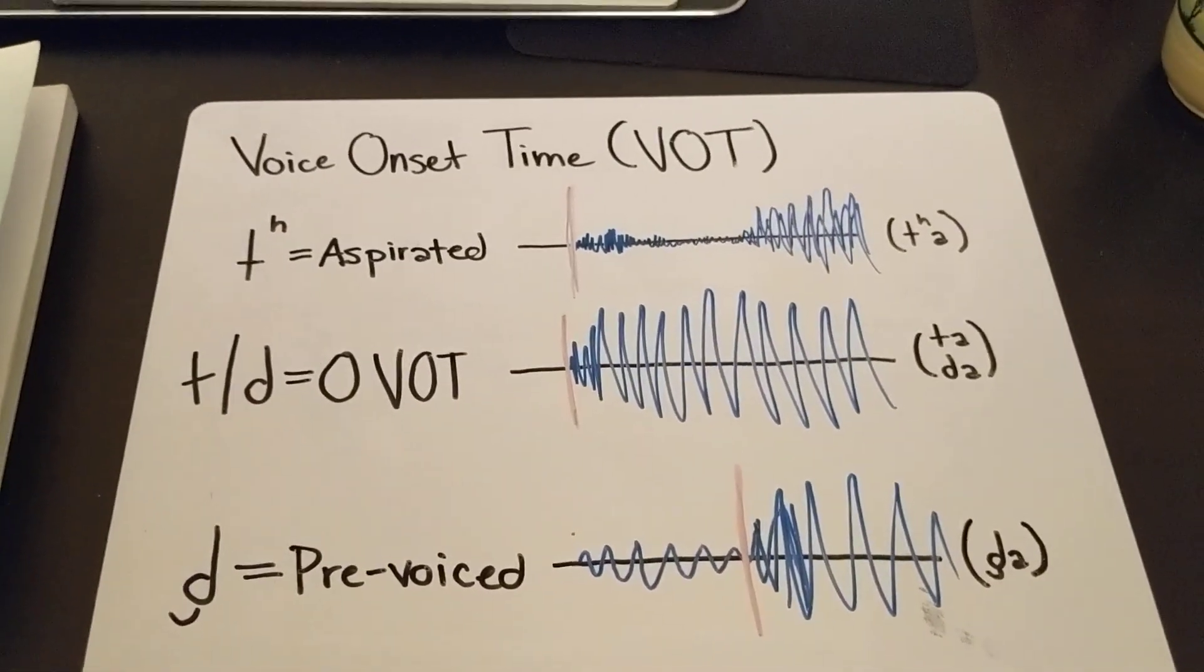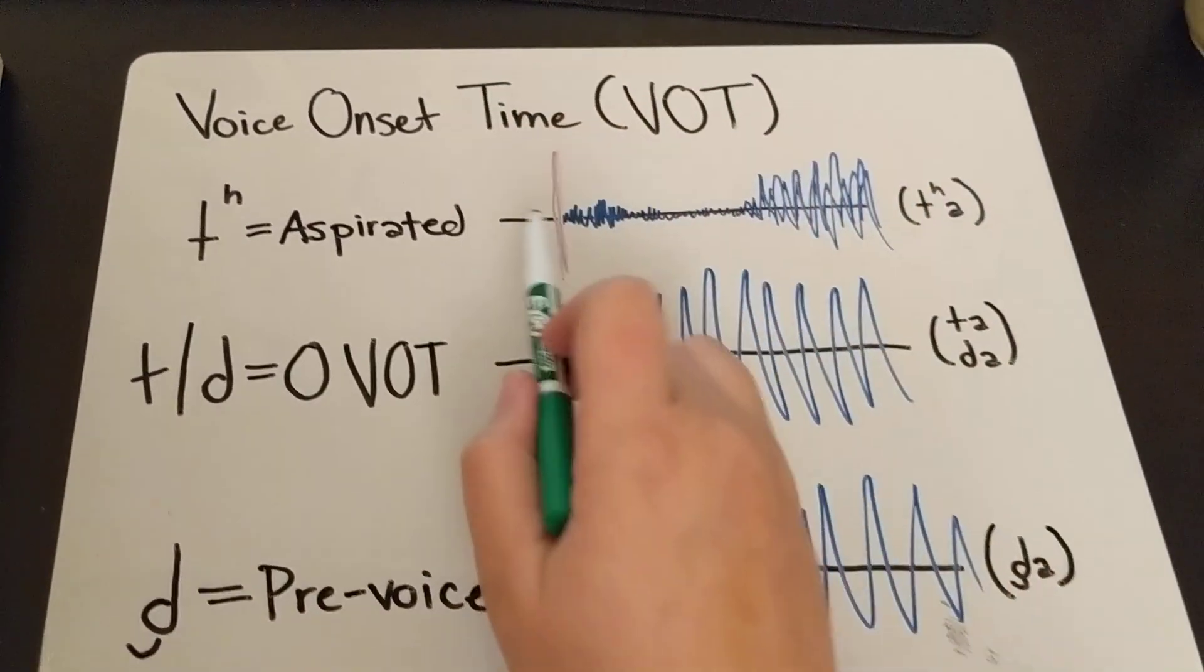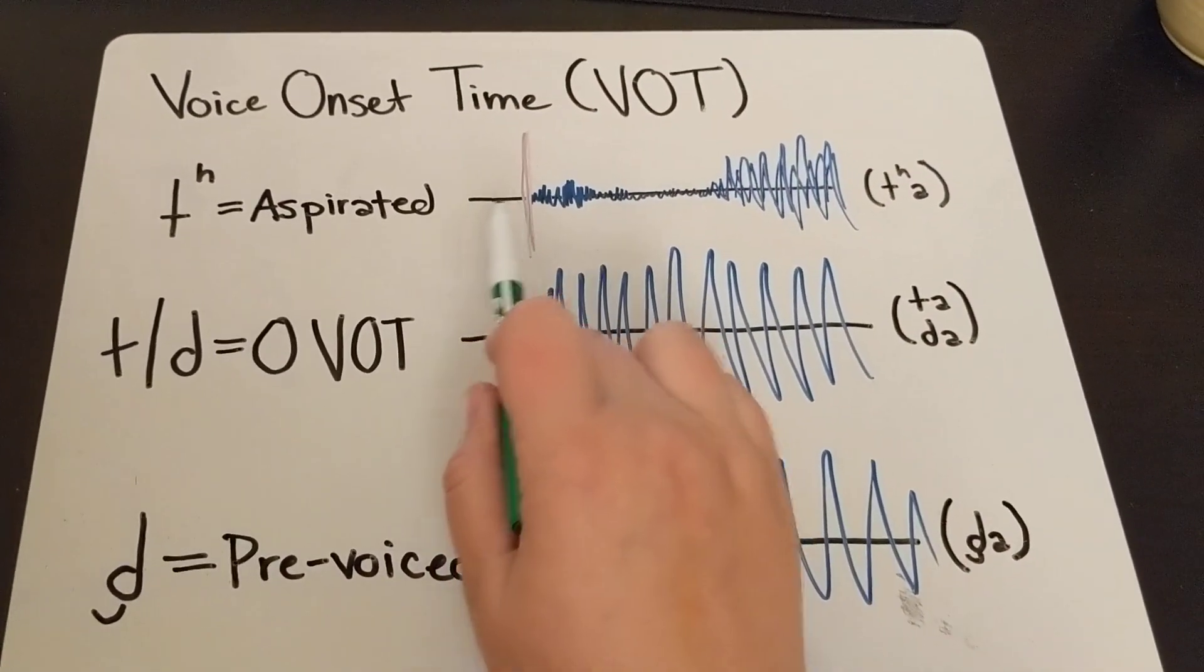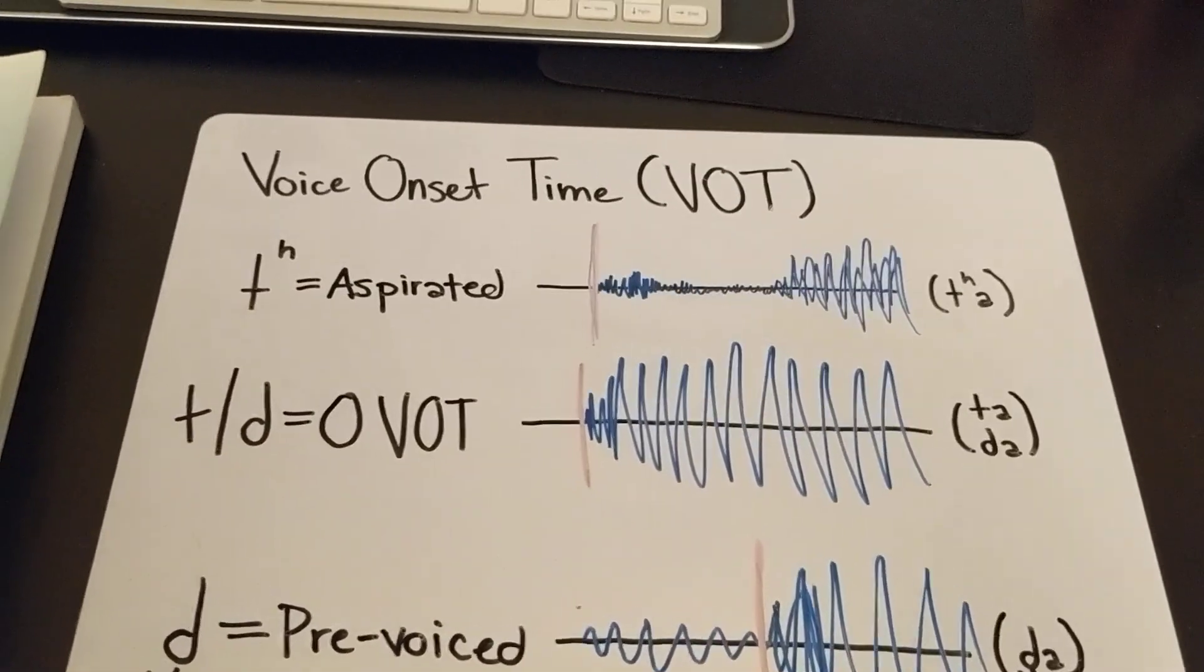So when you make a T sound, the result is that you get silence. If you've closed off everything and are not voicing anything, you have silence for a second.